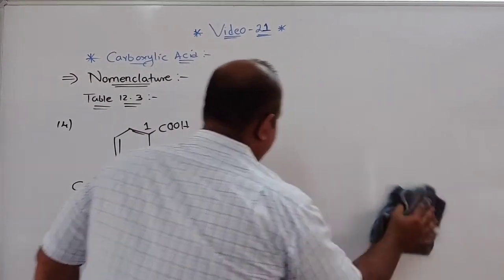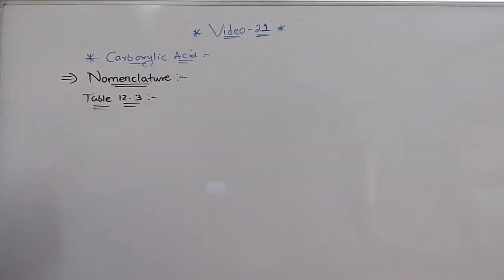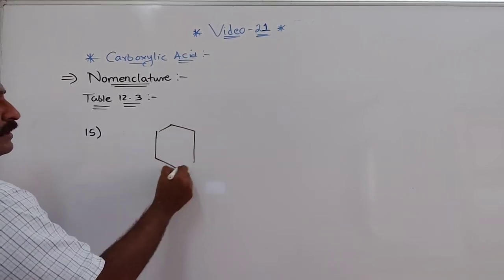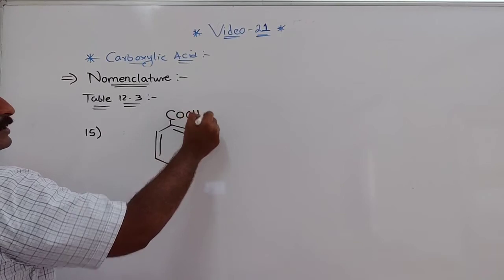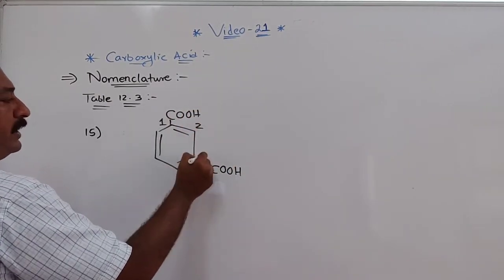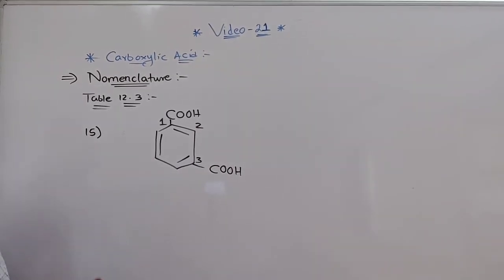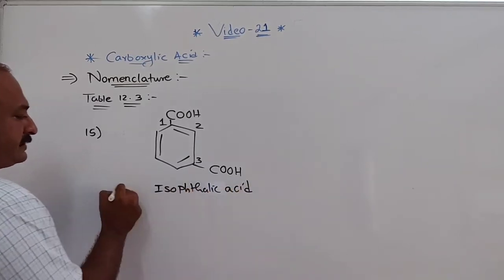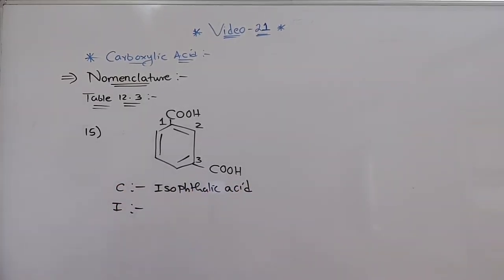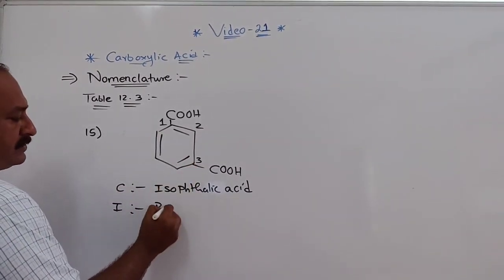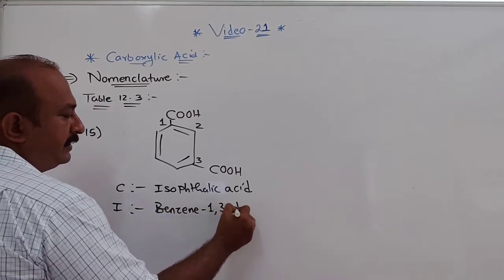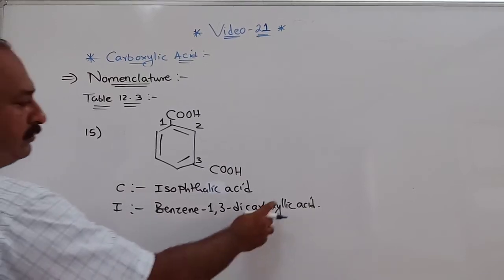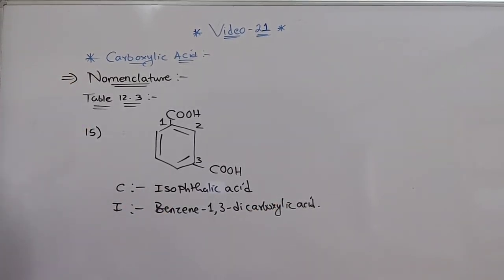The 15th example has a benzene ring with COOH groups at positions 1 and 3. The common name is isophthalic acid. The IUPAC name is benzene-1,3-dicarboxylic acid.